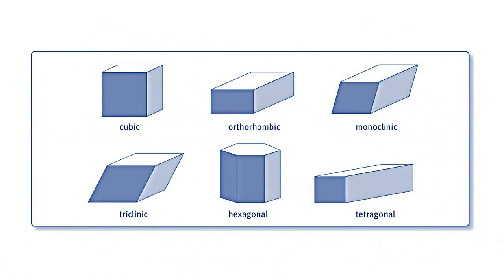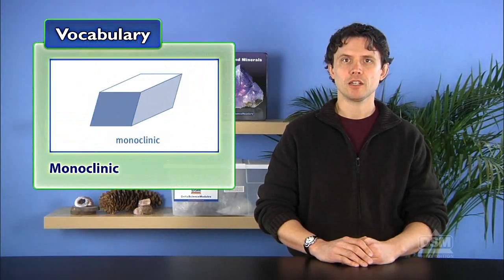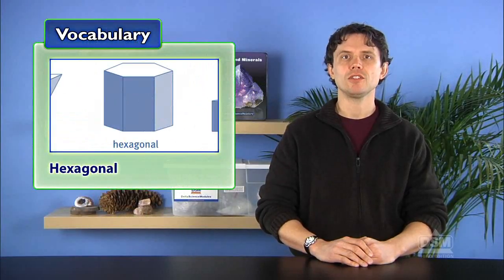Help students understand that although some crystals are large and some are small, all crystals exist as one of six shapes, and then introduce the six different crystal shapes: Cubic, orthorhombic, monoclinic, triclinic, hexagonal, and tetragonal.